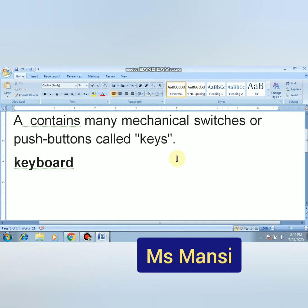Next, using Undo and Redo commands. Microsoft Word keeps track of all changes made in a document. We can easily undo any change and restore the original text. Undo reverses the effect of the last action. For example, we removed the word 'keyboard' from the text, so I will press the Undo key.